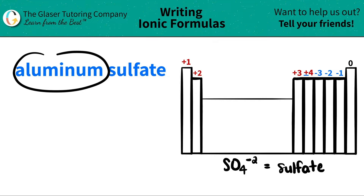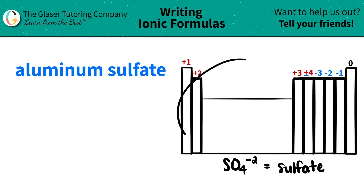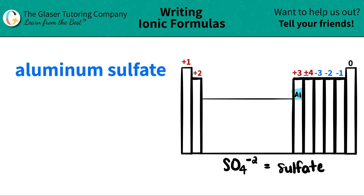The first thing I see is aluminum. I'm going to scan the periodic table to see where aluminum is — aluminum is right here. Aluminum is represented by Al and it's in this group. Aluminum has a plus three oxidative charge, so that's the first thing I'm going to write down. Aluminum likes to lose three electrons, so it's a plus three.